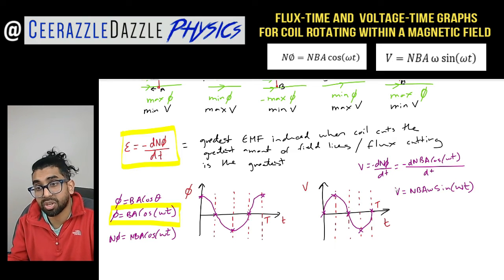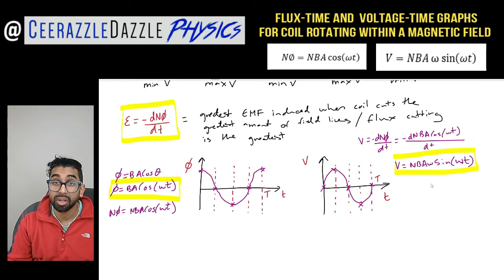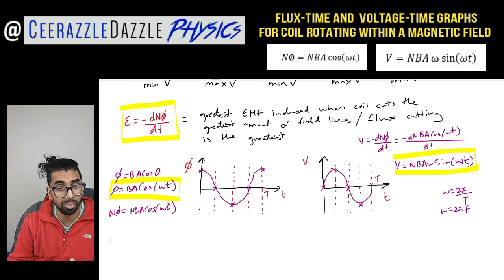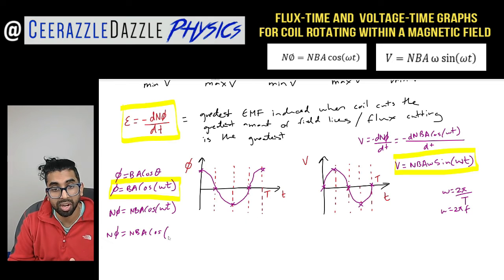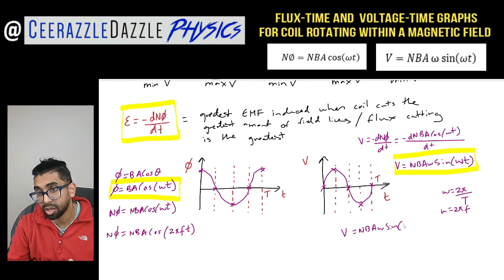So we've got one expression for flux and one expression for voltage. Sometimes they might want you to replace ω: remember that ω = 2π/T, and also ω = 2πf. So the flux equation becomes NΦ = NBA cos(2πft), and the voltage equation becomes V = NBAω sin(2πft). It's a long formula, but hopefully it now makes sense because we've walked through it.